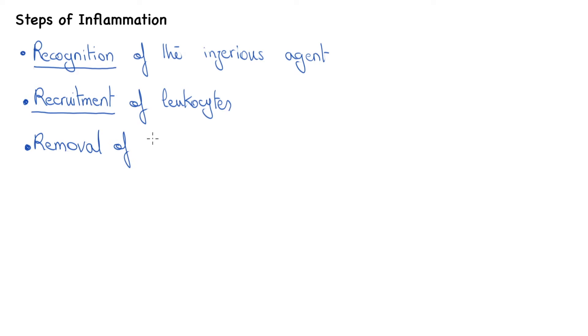The first one would be recognition of the injurious agent. The second one would be recruitment of leukocytes. The third one would be removal of the agent. Number four is regulation or control of the response, and number five is resolution or repair. Let's learn more about them and get into details of these steps.